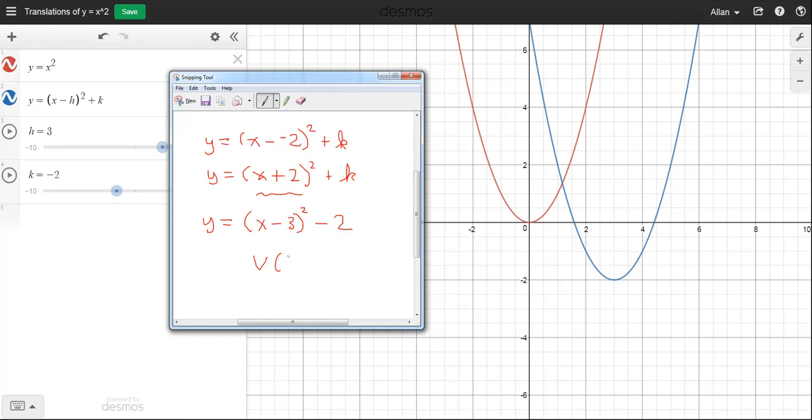So it's this number, three, comma, negative two. So those numbers, h and k, allow you to find what the vertex is.